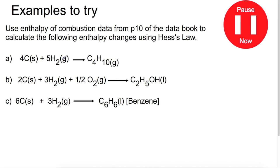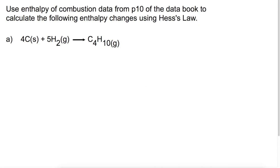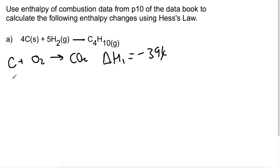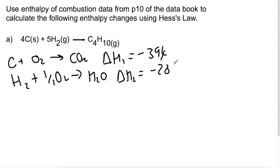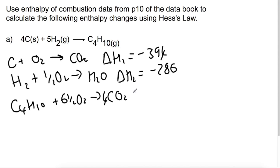Here are three examples for you to try. Remember to write out the combustion equations for each of the species, ignoring any oxygen, and then find the values on page 10 of the data book to do the calculation. For this first calculation — butane — we write: carbon plus oxygen gives carbon dioxide, delta H1 = minus 394; hydrogen plus half oxygen gives water, delta H2 = minus 286; and butane plus oxygen gives carbon dioxide and water, delta H3 = minus 2878.